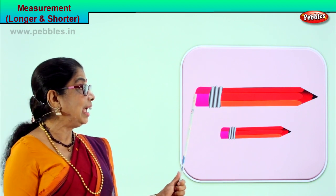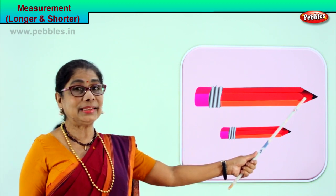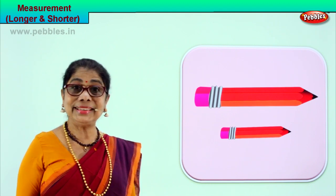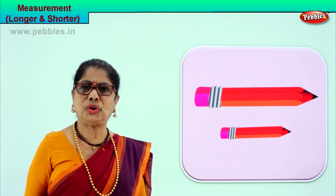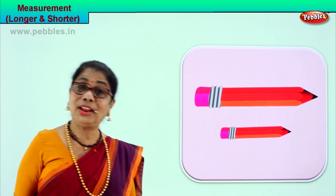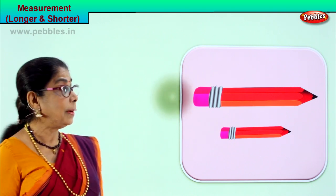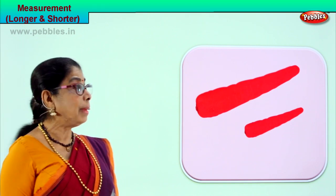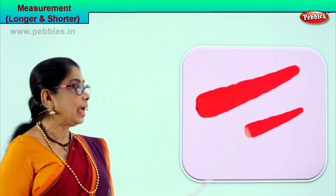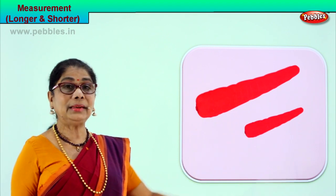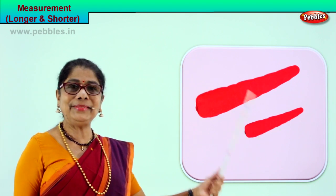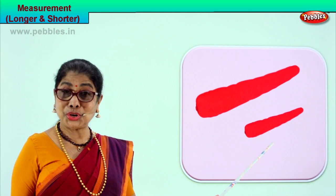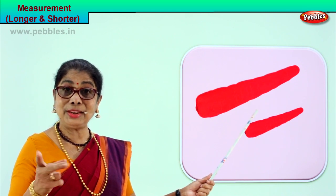Then you tell your friend, I have a longer pencil than you. Longer, shorter. Let's look at some more pictures to understand longer and shorter measurements. Look what you have here — I am sure you have seen in mummy's kitchen carrots. Some carrots are long, some are baby carrots — short. Then we say this carrot is shorter than this. We are comparing two measurements.